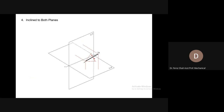The line can also be inclined to both planes. You can see the ends' distances from the horizontal plane — they are not the same, so it is inclined to the horizontal plane. And the ends' distances from the vertical plane are also not the same, so the line becomes inclined to the vertical plane as well — the line is inclined to both planes.